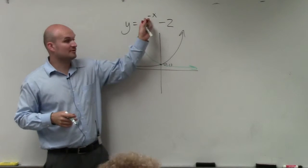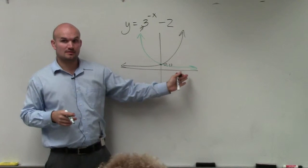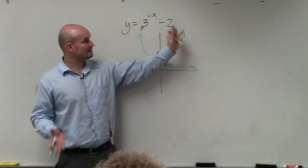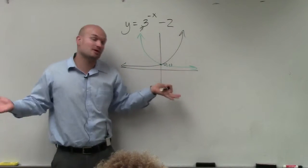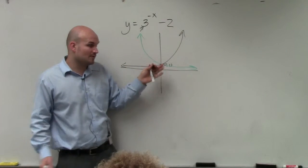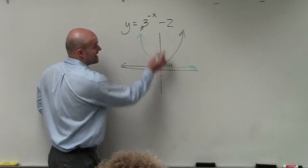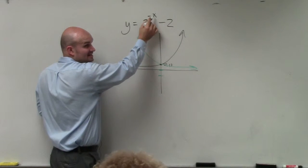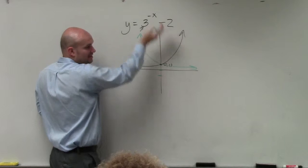So now, since that reflection, my graph looks like this. But what else is happening? I'm going minus 2. Well, the only point that I'm aware of is this (0, 1). So if I shift the graph down 2 - because the minus 2 is not inside the exponent, so it's not going to the right 2, it's going down 2.